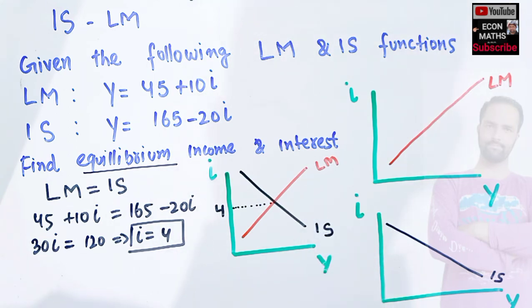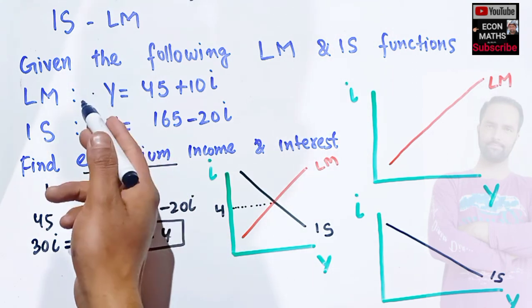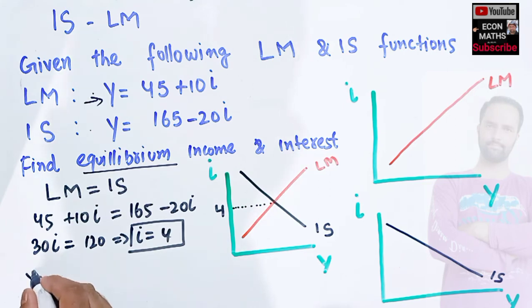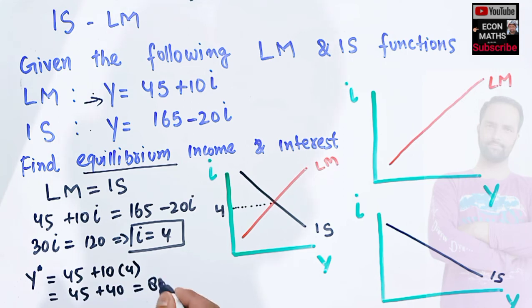Now to find the income, simply plug i = 4 either in LM or IS equation. Let's put it in the LM equation. That means our equilibrium income will be equal to 45 + 10 times 4, which comes out to be 45 + 40, which is equal to 84. So equilibrium level of GDP or level of income will be 85 and rate of interest will be 4.